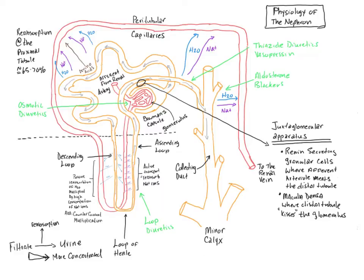The remaining 30–35% of reabsorption occurs everywhere else — in the loop of Henle, the distal convoluted tubule, and even some in the collecting duct. Interestingly, most of our drugs and hormones do not work on the proximal convoluted tubule. Most drugs and hormones work on that other 30–35% of reabsorption — it's in the fine-tuning where we have drugs, hormones, and things like that working.